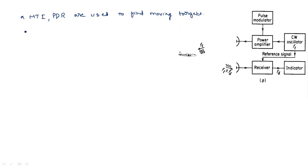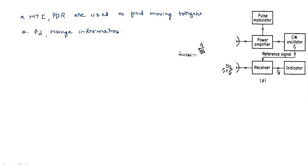In order to identify moving targets among stationary clutter, we need two pieces of information: Doppler information and range information. Range information tells us at what distance the target is located.